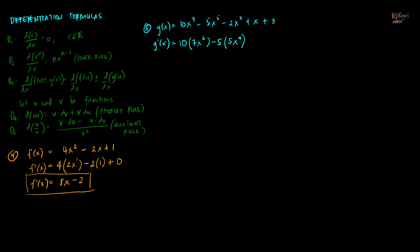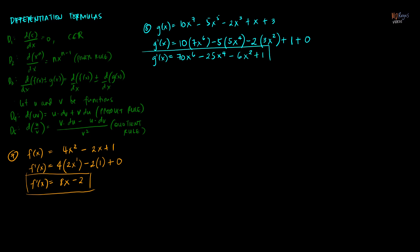In the next term, copy the constant negative 2 and take the derivative of x cubed using the power rule — bring down the exponent, copy the base, subtract 1 from the exponent. In the second-to-last term, it's just x, so the derivative of x with respect to itself is 1. The derivative of the constant 3 is 0 according to D1. Simplifying, g prime of x equals 70x to the 6th minus 25x to the 4th minus 6x squared plus 1.